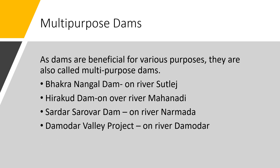A few multi-purpose dams in India are: Bakra Nangal Dam on the river Sutlej facilitates irrigation and tourism in Punjab and Himachal Pradesh. Hirakud Dam on the river Mahanadi in Odisha prevents floods in Odisha. Sardar Sarovar Dam on the river Narmada in Gujarat facilitates irrigation in Madhya Pradesh and Gujarat and provides drinking water. The Damodar Valley Project on the river Damodar in West Bengal prevents floods and facilitates irrigation in West Bengal.